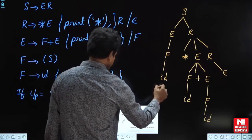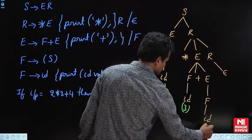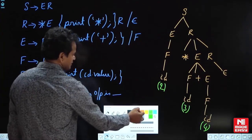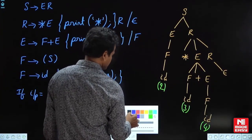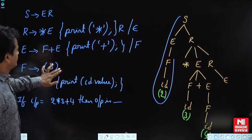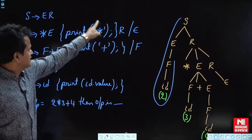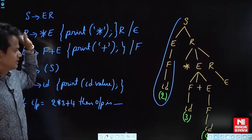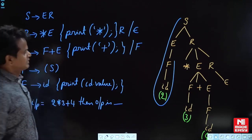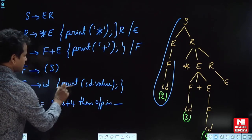Now look at this: id star id plus id. The token values are 2, 3, and 4, so 2 into 3 plus 4. Now go for the action evaluation. Everything is at the end except this one — this action has to be taken after star and E, whereas this action is at the time of reduction.